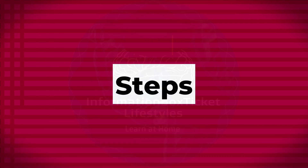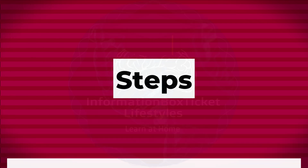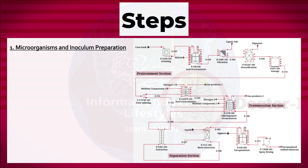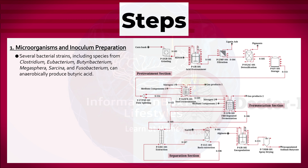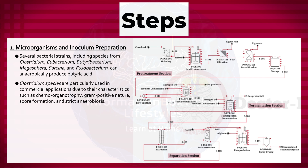Butyric acid fermentation steps. First, microorganism and inoculum preparation: several bacterial strains, including species from Clostridium, Eubacterium, Butyrobacterium, Megasphaera, Sarcina, and Fusobacterium, can anaerobically produce butyric acid. Clostridium species are particularly used in commercial applications due to their characteristics such as chemo-organotrophy, gram-positive nature, spore formation, and strict anaerobiosis.